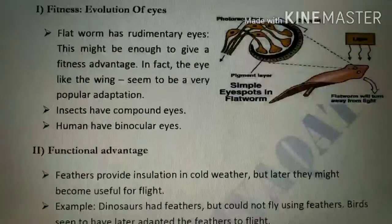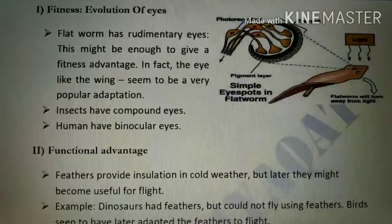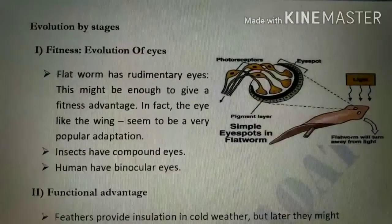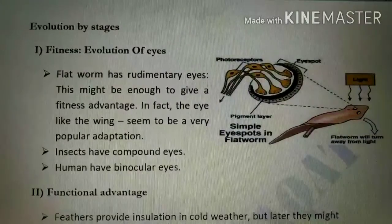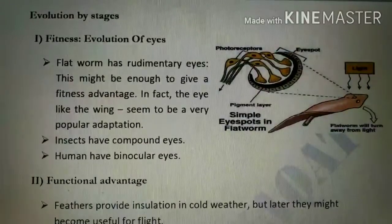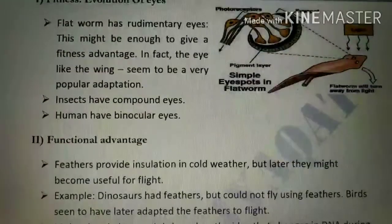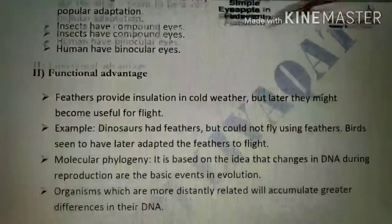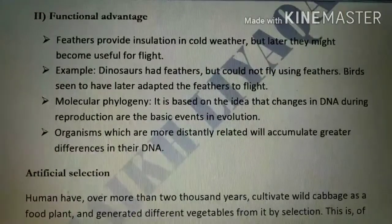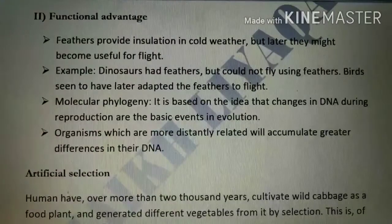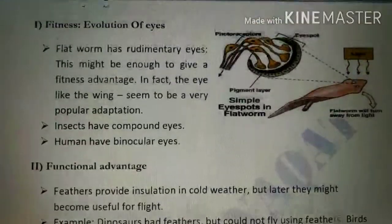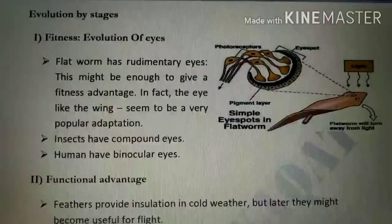Hi students, today we are going to cover another very important concept of the heredity and evolution chapter — evolution by stages. In evolution by stages, we have to remember three very important points: fitness, which includes the evolution of the eye; functional advantage; and artificial selection.